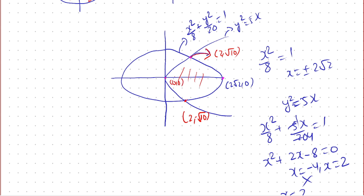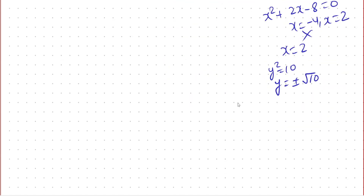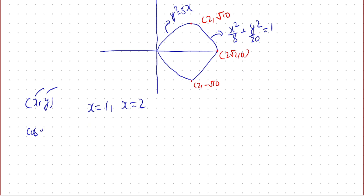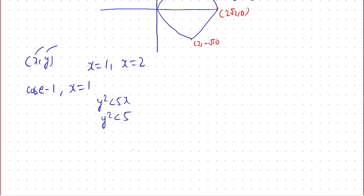The origin (0, 0) is also noted. Let's draw the common region on a fresh plot. We need integer lattice points (x, y) in the region where x lies between 0 and 2√2, so x can be 1 or 2. For Case 1, x = 1: the condition y² < 5x gives y² < 5, so y lies between −√5 and √5. Since y is an integer, y can be −2, −1, 0, 1, or 2.